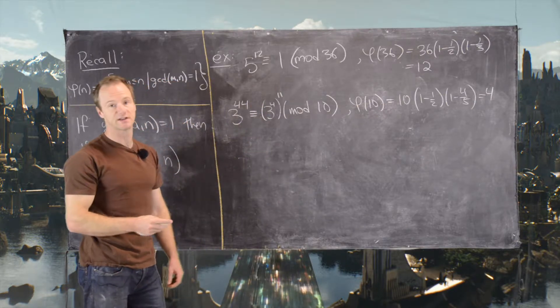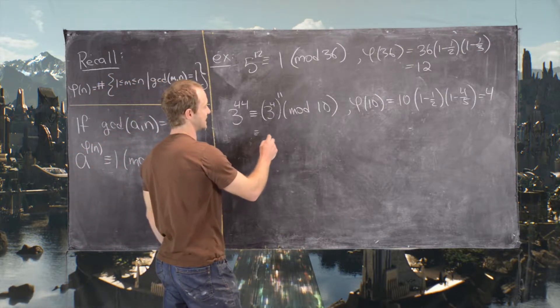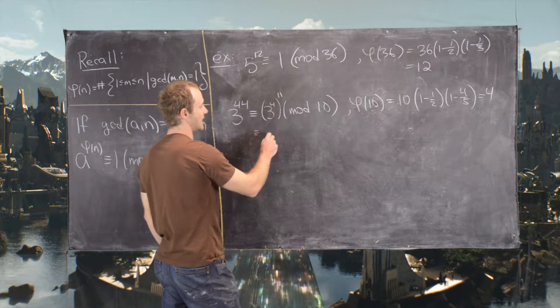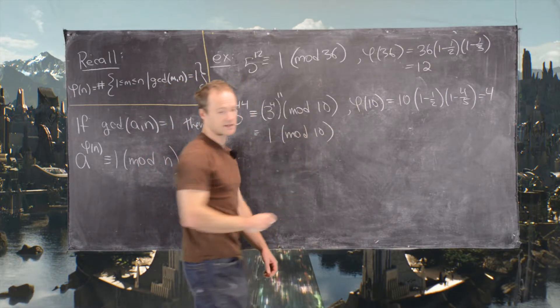And then we know that 3 to the 4 is congruent to 1 mod 10. So this gives us this is 1 to the 11 mod 10, which is just 1 mod 10.